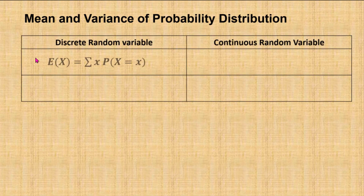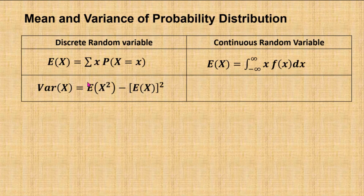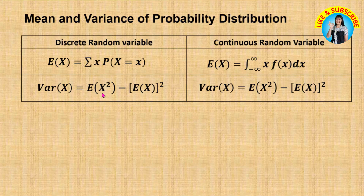The expected mean of the discrete probability distribution is defined as the sum of the product of each possible value of a random variable and the probability of the value. The expected mean of the continuous probability distribution is defined as the integration of the product of the random variable and the probability density function in the interval where the function is defined. The formula for the variance of both discrete and continuous probability distributions is the same: variance of X equals E(X squared) minus E(X) squared.